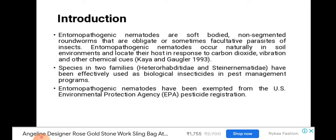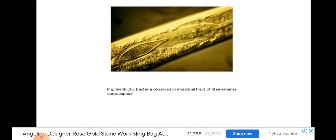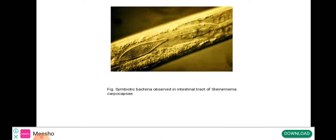In pest management programs, EPNs have been exempted from the U.S. Environmental Protection Agency pesticide registration. This figure shows an entomopathogenic nematode — specifically the infective juvenile stage of this particular genus — and the symbiotic bacteria harbored in the intestinal tract of Steinernema carpocapsae.